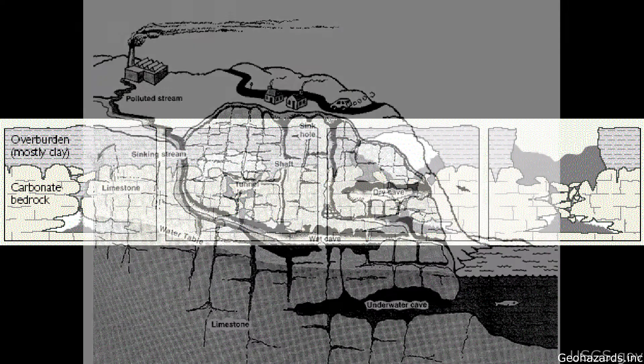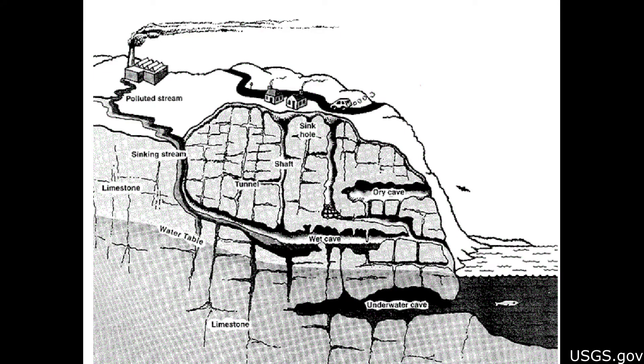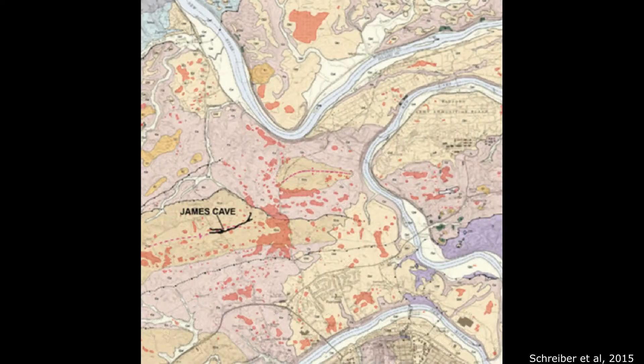Sinkholes form in carbonate bedrock for its homogenous properties and thin residual mantle. They also form in areas closer to present fault locations and further from areas with surface streams.